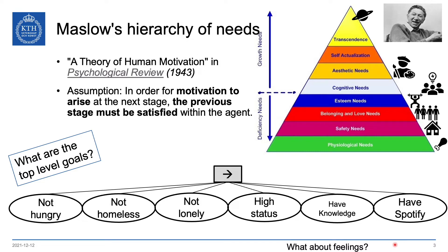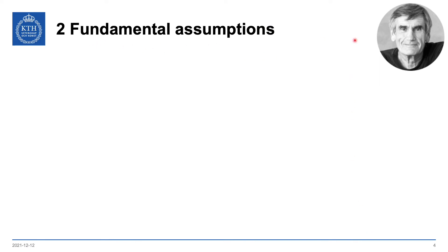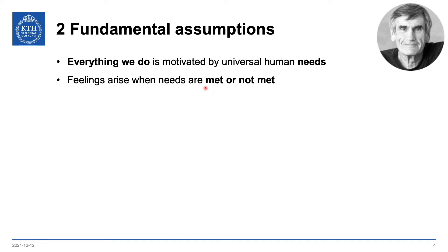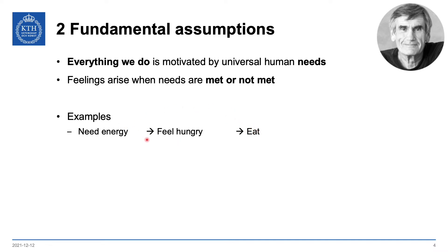Feelings and needs are connected — feelings arise when needs are not met. Two fundamental assumptions made by Marshall Rosenberg: everything we do is motivated by universal human needs, similar to Maslow's but with a longer list, and feelings arise when those needs are met or not met. So if we're hungry, the need for food is not met, and having eaten we have a nice feeling of being full. The need for energy makes us feel hungry, and we eat to meet that need — but what brings our attention to the need is the feeling of hunger.